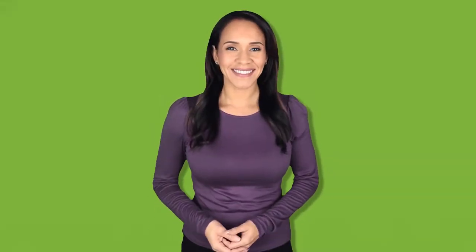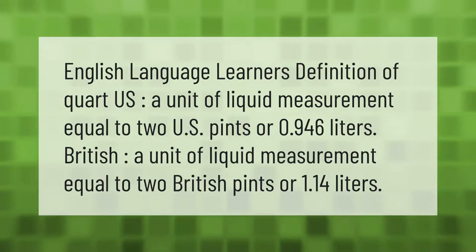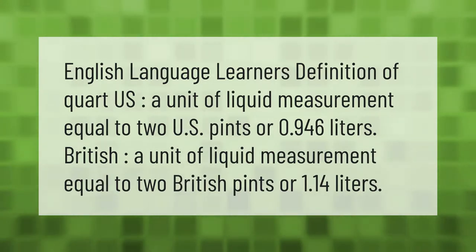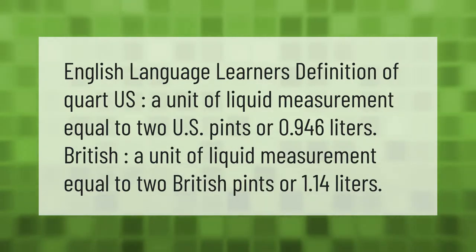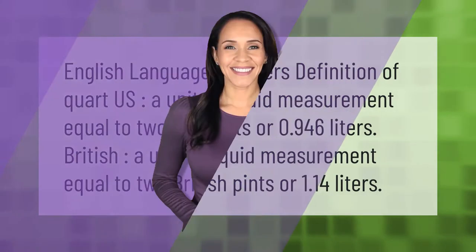English language learner's definition of quart: U.S. — a unit of liquid measurement equal to two U.S. pints or 0.946 liters. British — a unit of liquid measurement equal to two British pints or 1.14 liters. Thank you for watching. Please subscribe and hit the bell notification.